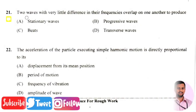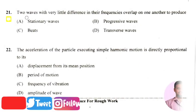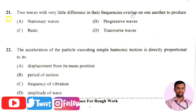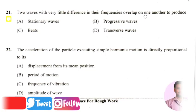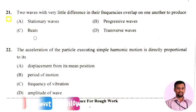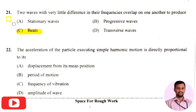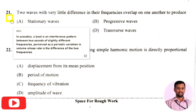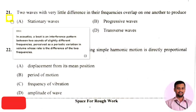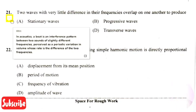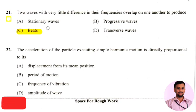The next question in this applied science section: two waves with very little difference in frequencies overlap on one another to produce — the right answer is option three, that is beats. A beat is an interference pattern between two sounds of slightly different frequencies. That is a simple definition of beats.